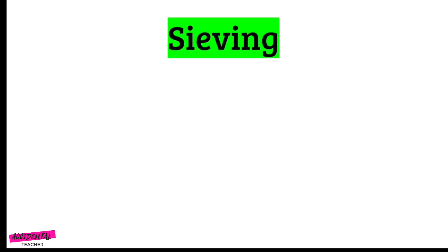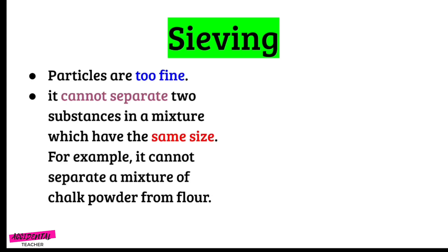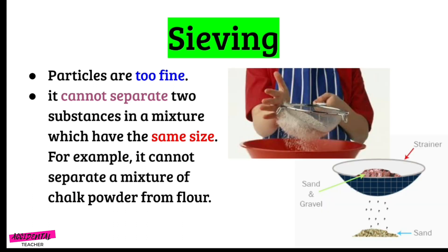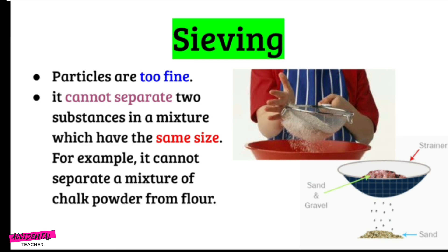Next is the sieving method. The sieving method can be used if the particles are too fine, which means too small. However, it cannot separate two substances in a mixture which have the same size. For example, it cannot separate a mixture of chalk powder from flour. As you can see in the picture, the sieving method is used when particles are really small.